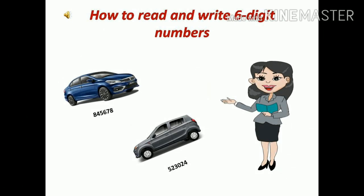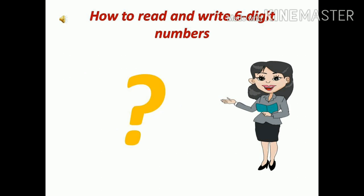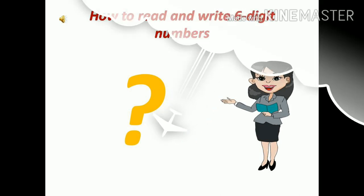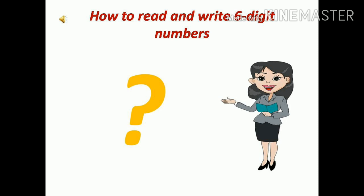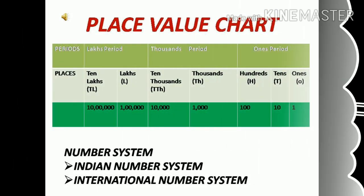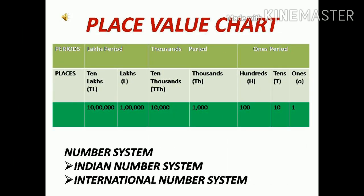Before this lockdown started, I wanted to buy a car. So, I visited some online shopping sites to know the prices. The price of one car was Rs. 8,45,678 and another was Rs. 5,23,024. Wondering how to read these numbers? Don't you think it was easy to read 4 or 5-digit numbers in comparison to 6 or 7-digit numbers? Actually, it is not that difficult — it is very easy. I'll tell you how.